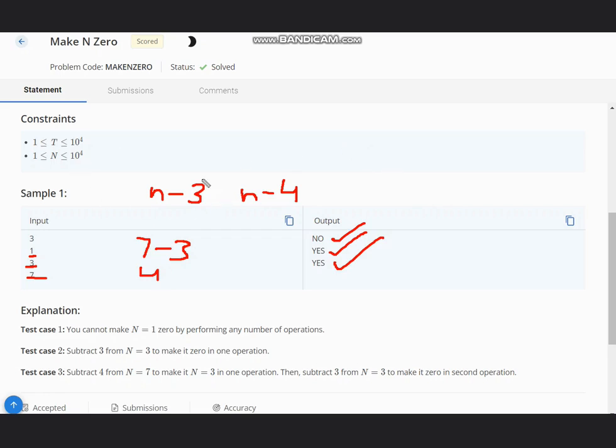I hope you understand the logic that we can subtract any number of times from N. The amount of 3 and 4 is unlimited. Suppose we have N = 10, so if I do 10 minus 3, that gives me 7, and then 7 minus 3 minus 4 would give me 0.